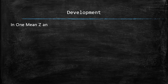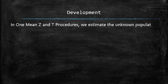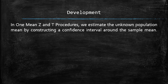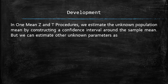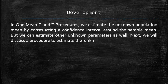In one-mean z and t procedures, we estimate the unknown population mean by constructing a confidence interval around the sample mean, but we can estimate other unknown parameters as well. Next, we will discuss a procedure to estimate the unknown population proportion.